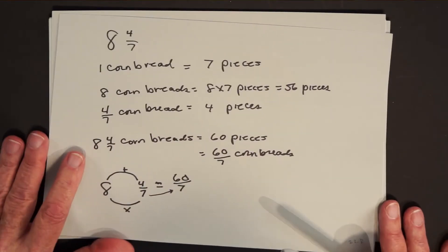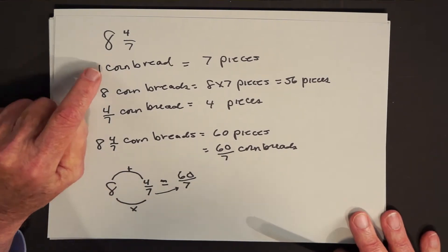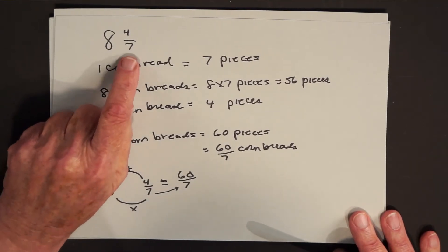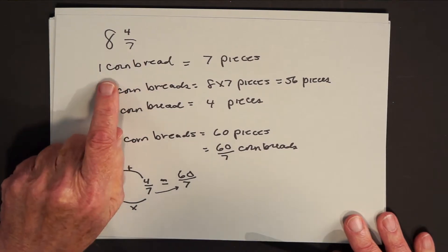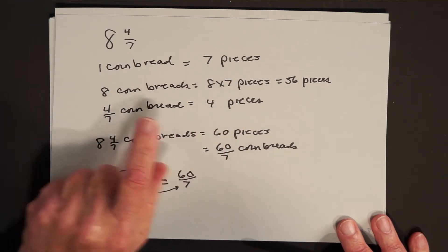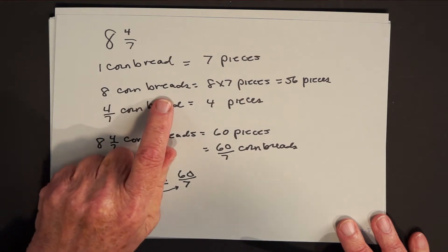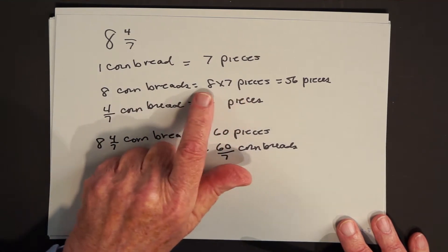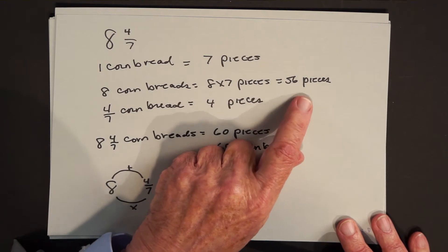How do we treat this in terms of whole numbers? This is what we introduced the cornbread model for. So for example, looking at 8 and 4 sevenths, in terms of cornbreads, the denominator 7 tells us to think of a cornbread as being divided into 7 pieces. In that case, 8 cornbreads would be 7 pieces 8 times, or 56 pieces.